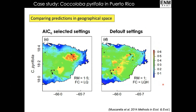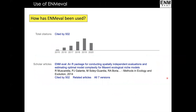You can also see that the choice of settings has real consequences when we project the models into geographic space. Here are the mapped predictions based on the settings with the lowest AIC from this example versus the default settings on the right-hand side. You can see that the projected maps look quite a bit different.